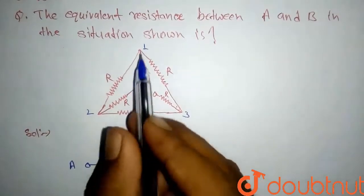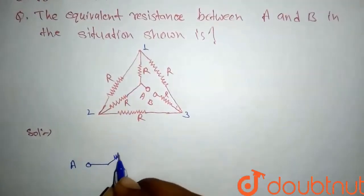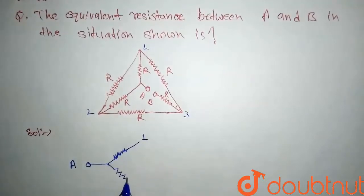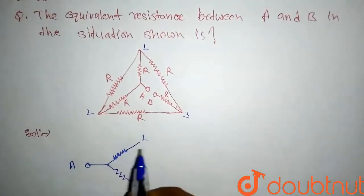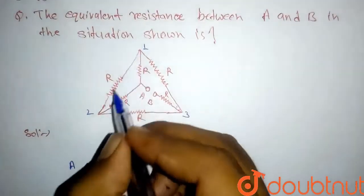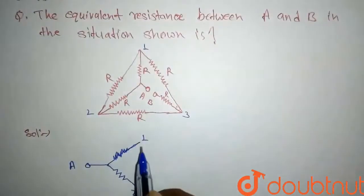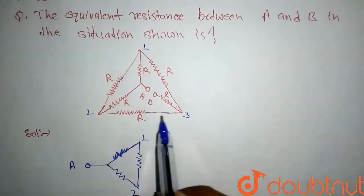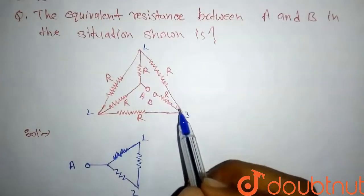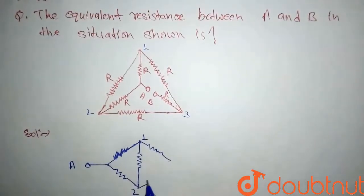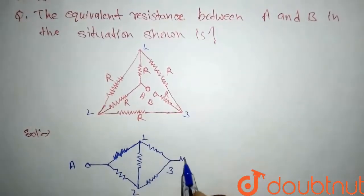Point A is connected to vertex one and vertex two, each with a resistance R. Then there is one resistance R connected between one and two. Vertex two is connected to three, and vertex one is also connected to three, each with resistance R. Finally, three is connected to B with a resistance R.